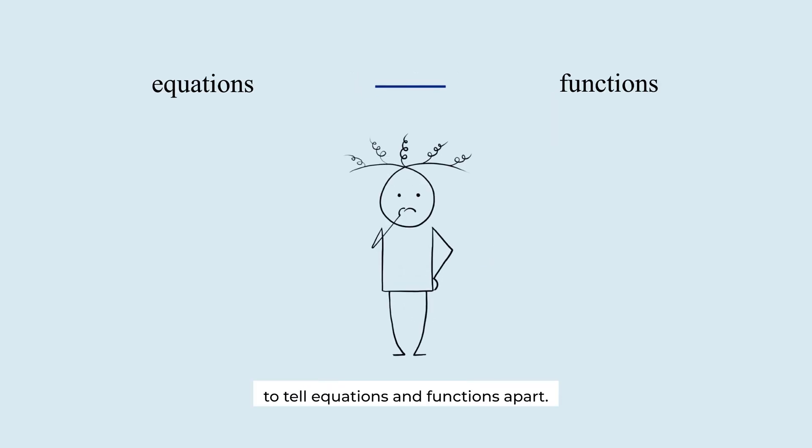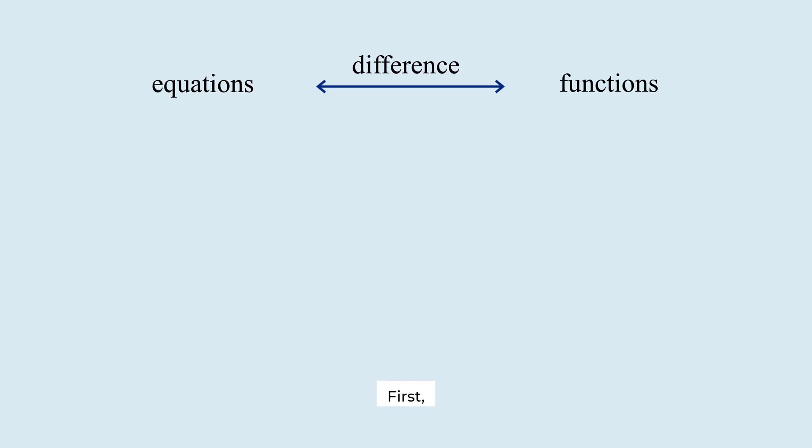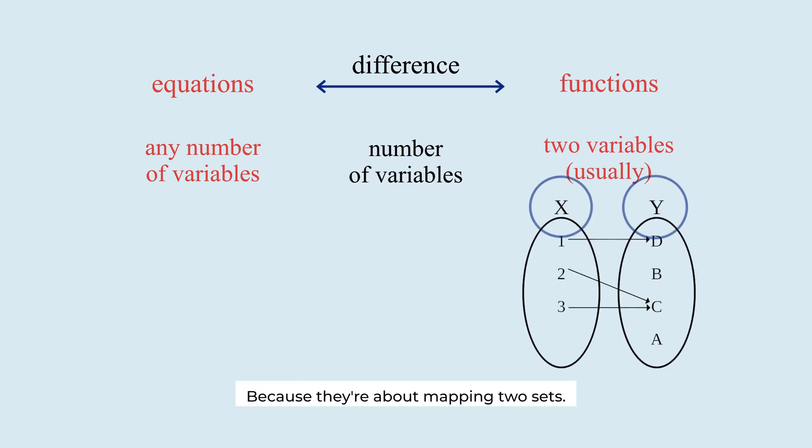There are some ways to tell equations and functions apart. First, equations can have any number of variables. While functions usually relate two variables because they are about mapping two sets.